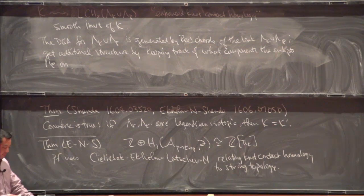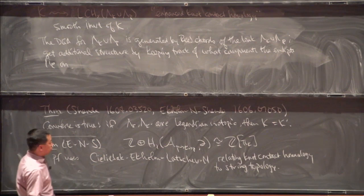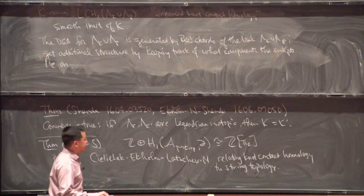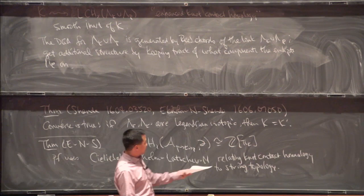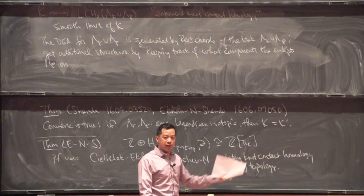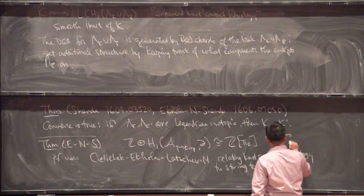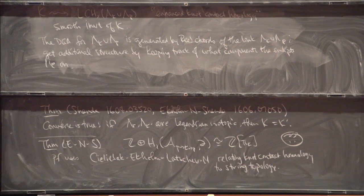With a little more work, following Shende's approach, from this enhanced Legendrian contact homology we can extract the group ring of the knot group, and with more work identify the longitude and meridian inside of it. The group ring together with the longitude and meridian is enough to completely determine the knot type.